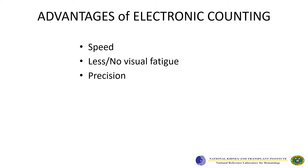What are the advantages of electronic counting over the hemocytometer method? The most obvious is speed — results can be obtained within a fraction of a minute. Another advantage is little to no visual fatigue for the technologist. Also very apparent is the difference in precision, as results from electronic counting are more precise.